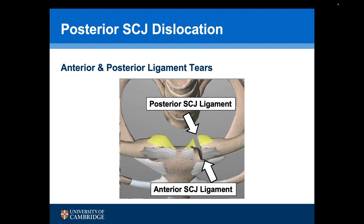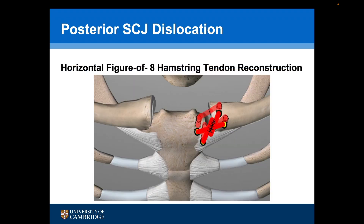To stabilise the joint, it is not possible to repair the torn anterior and posterior ligaments, and I prefer to undertake a reconstruction using a hamstring tendon graft. My preferred configuration is a figure-of-8 hamstring tendon reconstruction.